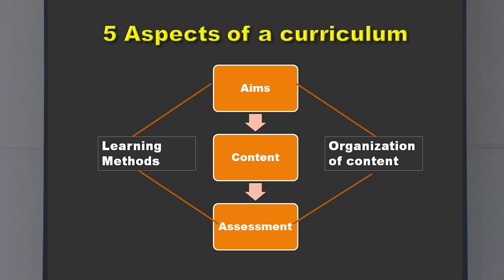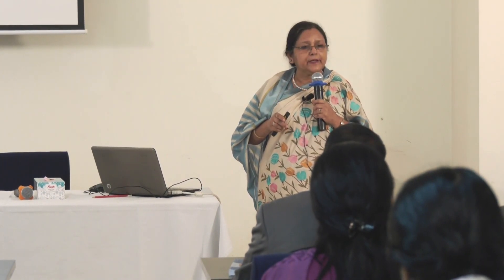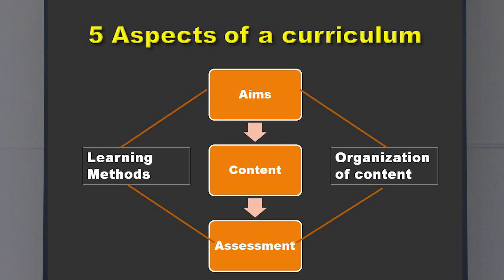In the curriculum, there are five aspects: aims, content, organisation of the content, assessment, and learning methods. It is important to note that syllabus and curriculum are not synonymous. The syllabus is only the list of content, but the curriculum includes the syllabus plus the organisation of content, aims and objectives of the course, assessment methods, and learning methods.